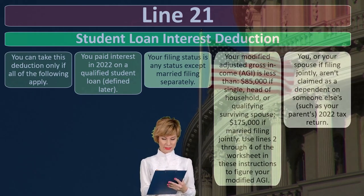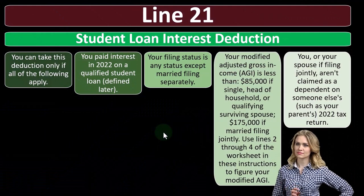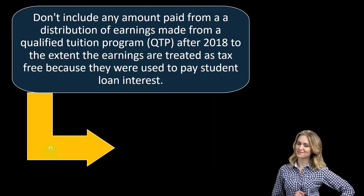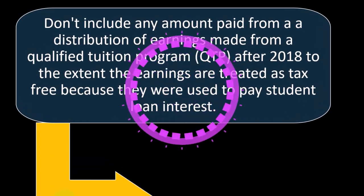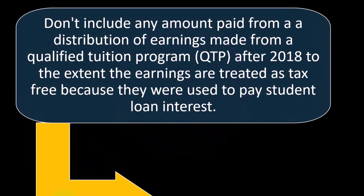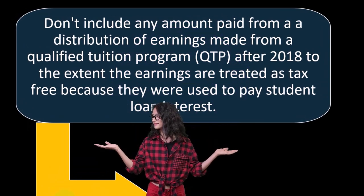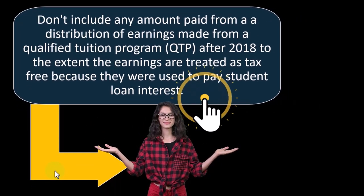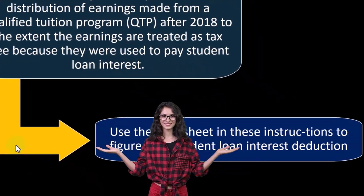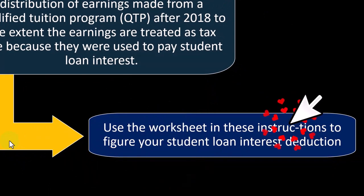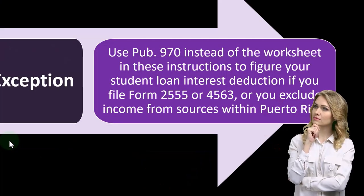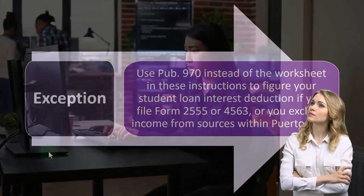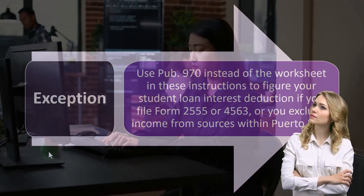You or your spouse filing jointly aren't claimed as a dependent on someone else's — such as your parents' — 2022 return. Don't include any amount paid from a distribution of earnings made from a qualified tuition program (QTP) after 2018, to the extent the earnings are treated as tax-free because they were used to pay student loan interest. Use the worksheet in these instructions to figure your student loan deduction. Tax software will be helpful in practice for determining the amount of the deduction on the interest.